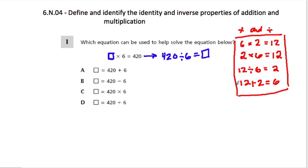Or we can do addition and subtraction, but the idea is that this always works. In fact, this matches pretty nicely to our equation, except instead of the number 12 and 2, we have 420 and some unknown. So 420 divided by 6 will give us the missing number. And in fact, D says that exact same thing.